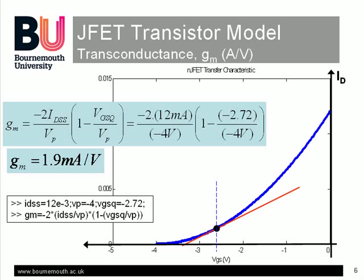Incidentally, we could have got the same result by taking the tangent to the characteristic at VGSQ equals minus 2.72 volts, here measured as around 5 mA over 2.63 volts.